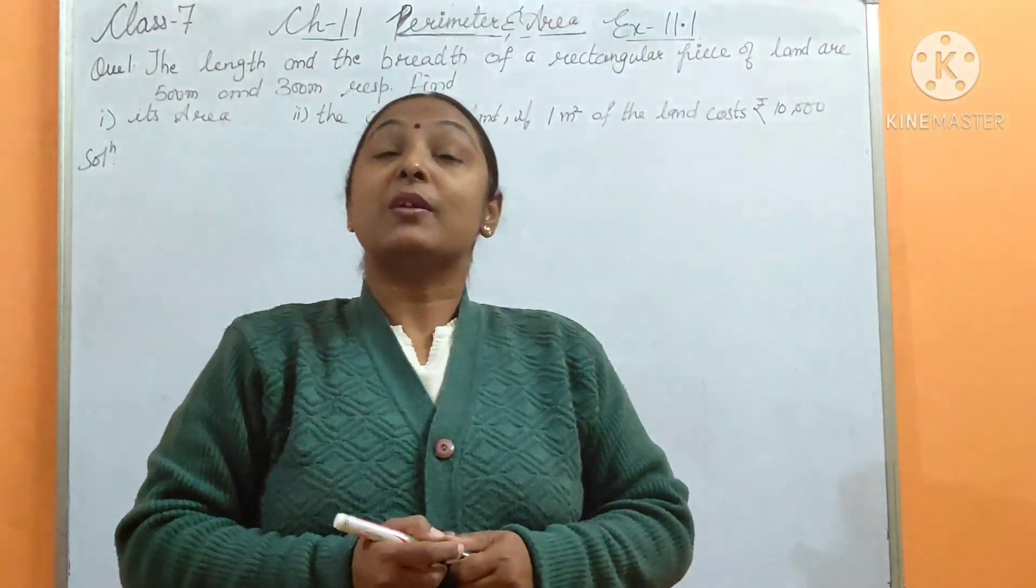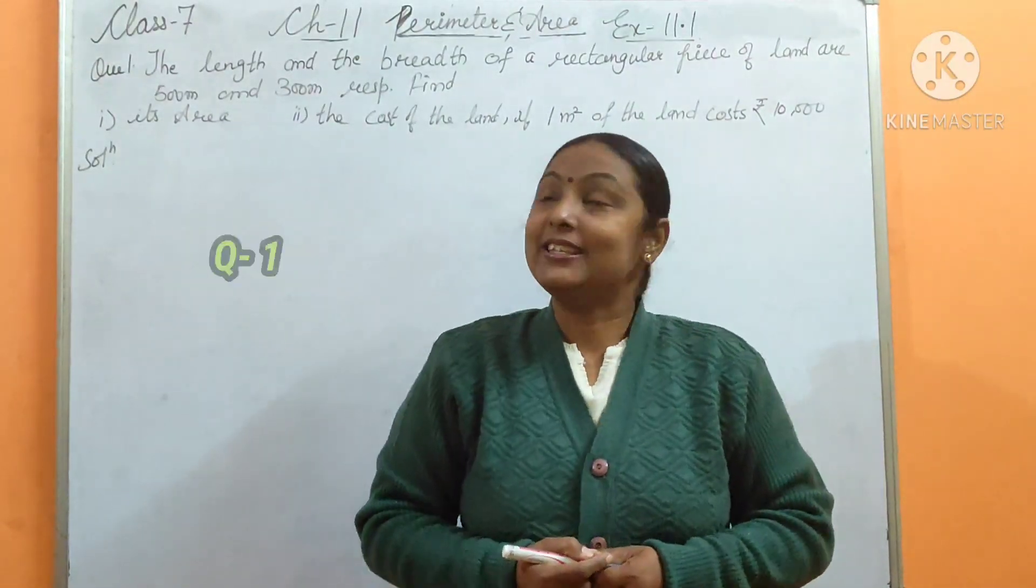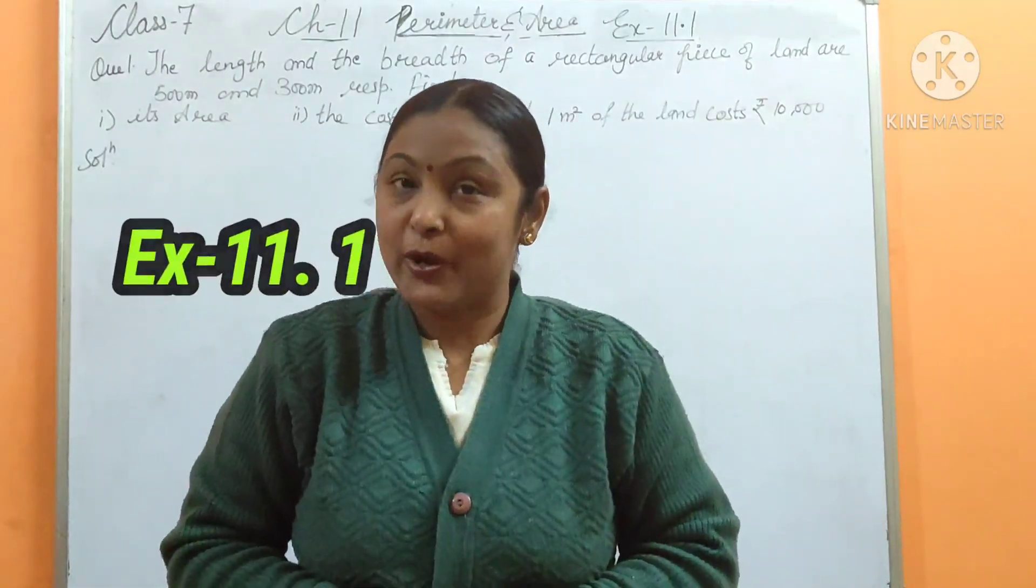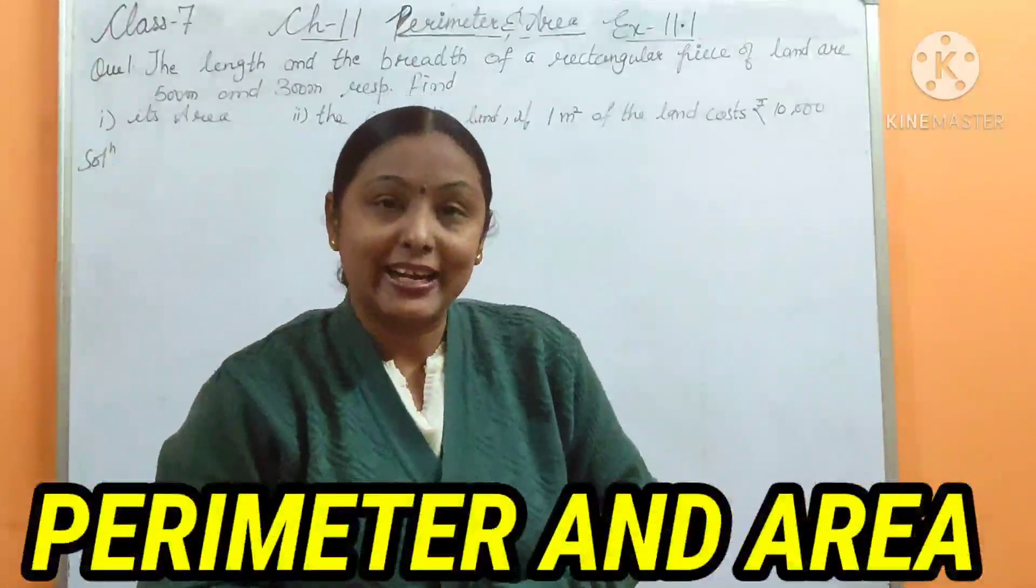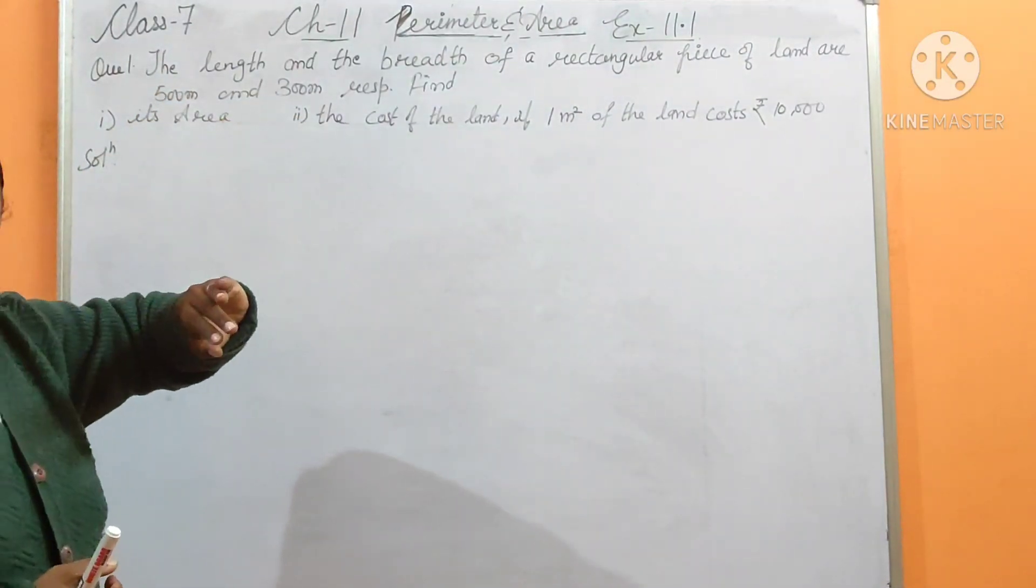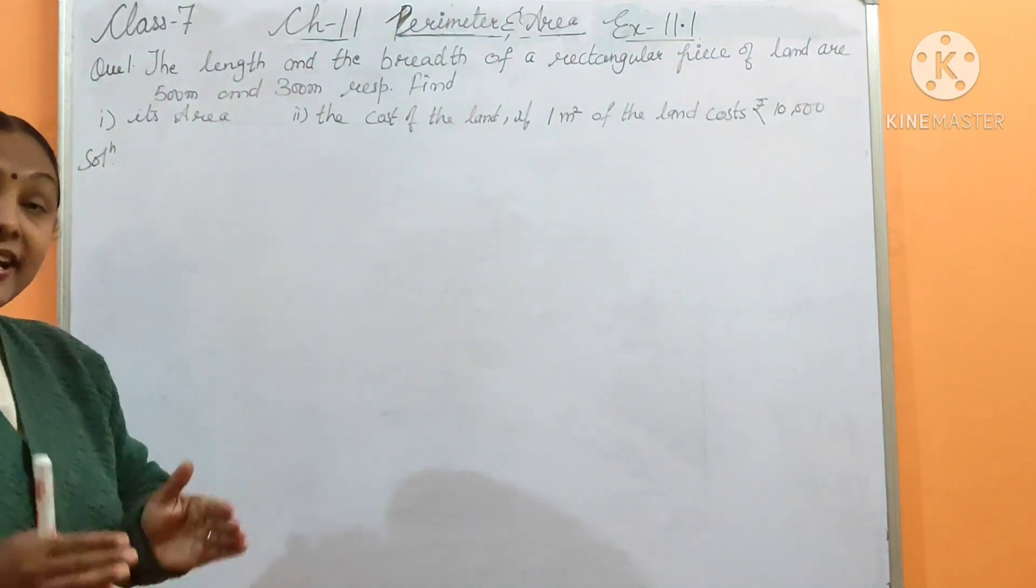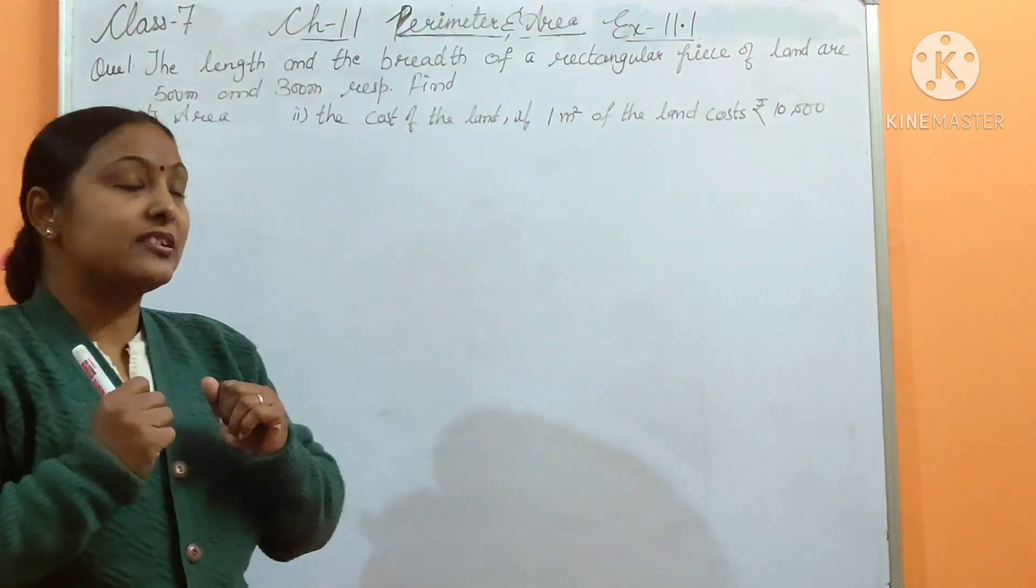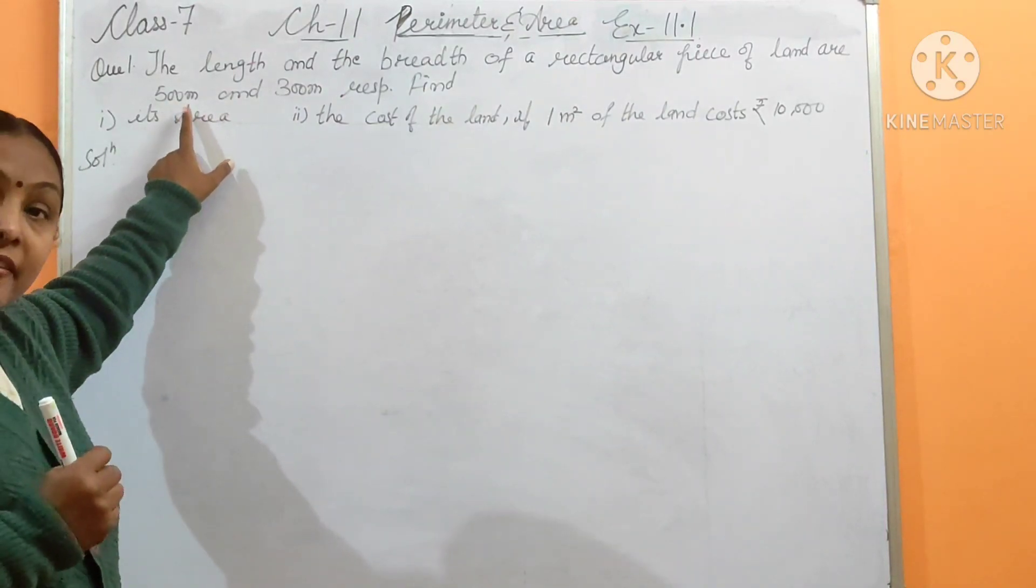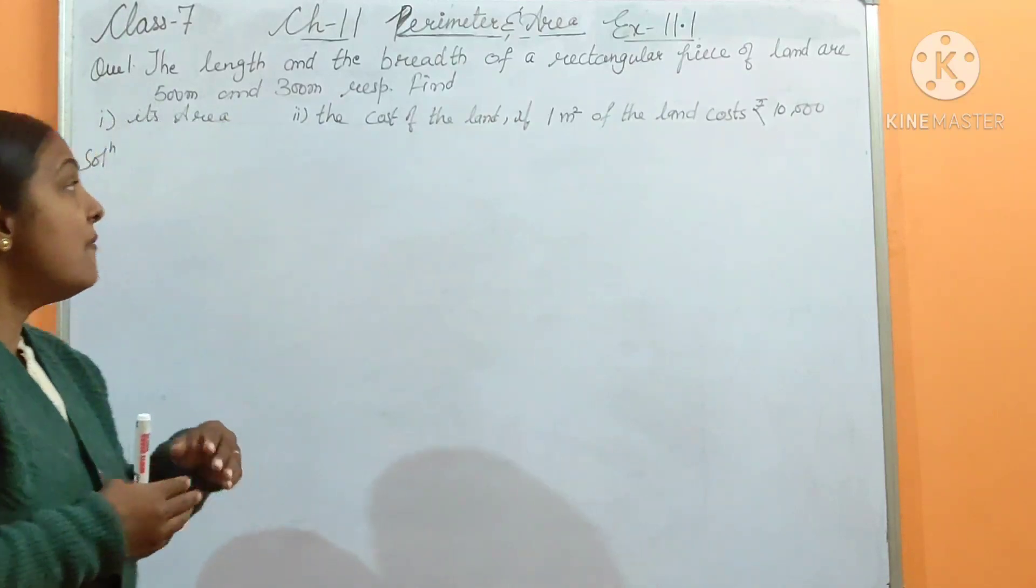Hello and welcome again to the math class with me Sarika on Math Cookies. This is question number one from exercise 11.1, perimeter and area. The question is that the length and breadth of a rectangular piece of land - the land is a rectangular shape and the measurement is 500 meter length and 300 meter breadth.